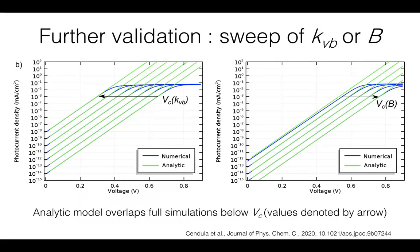We also validated the analytical model by sweeping reaction rate KVB on the figure on the left. The direction of the arrow is in the increasing KVB in six orders of magnitude, six steps. And the arrow is positioned at the value of critical voltage predicted from the model. And we see that it perfectly overlaps with the voltage range where the analytical model overlaps well with the blue full numerical solution.